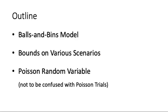In this lecture, we will introduce a very simple but useful model called the balls and bins model, and study various scenarios associated with it, deriving corresponding bounds for some events. After that, we will introduce a new type of random variable called the Poisson random variable, which has applications in queuing theory. Let's start.